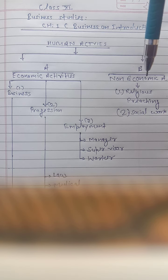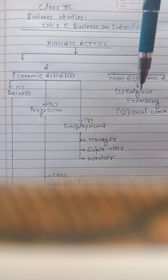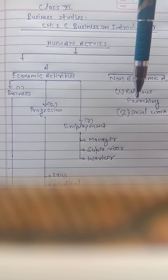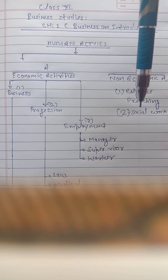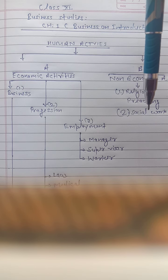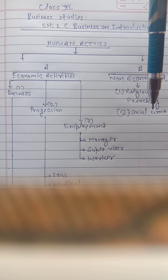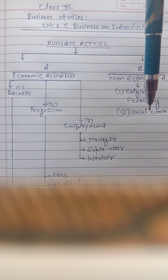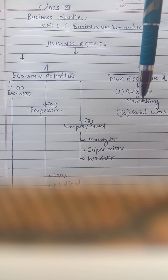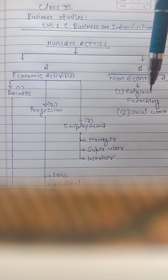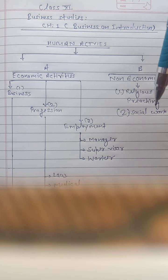We start first with non-economic activities, because there is no profit-making motive there. These activities include religious preaching, and second is social work — whatever we do just for society, just to serve the society. In these two activities, there is no profit-making objective.